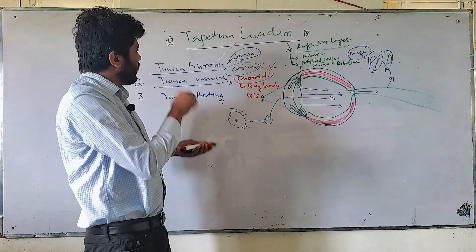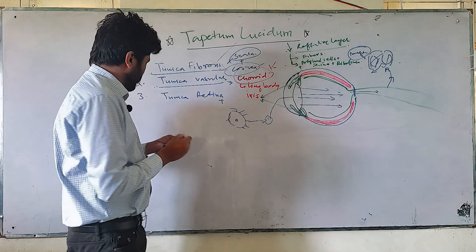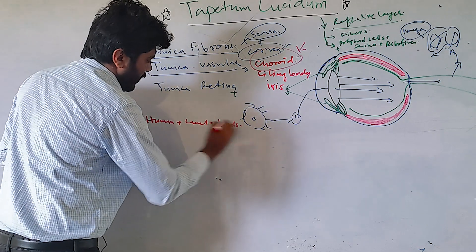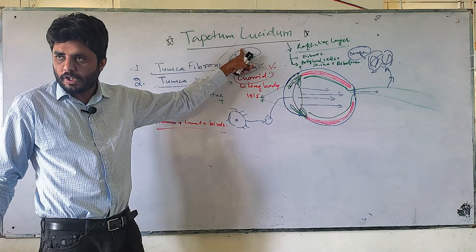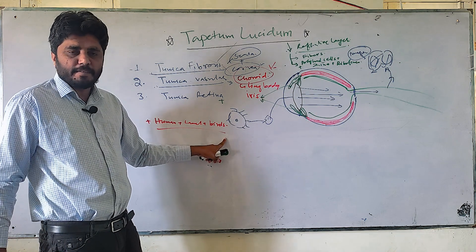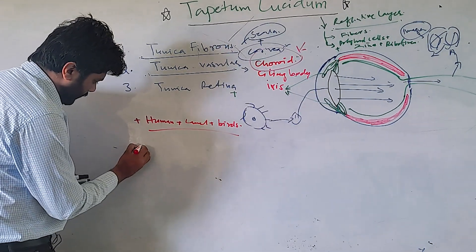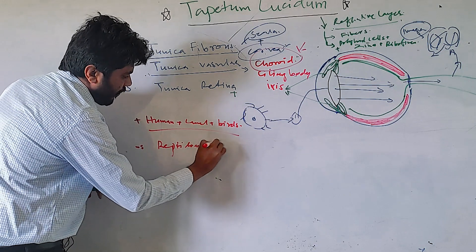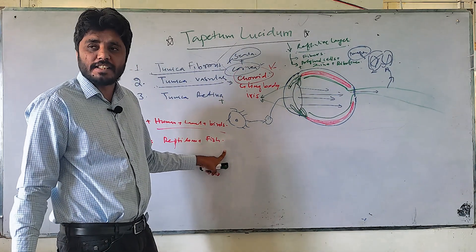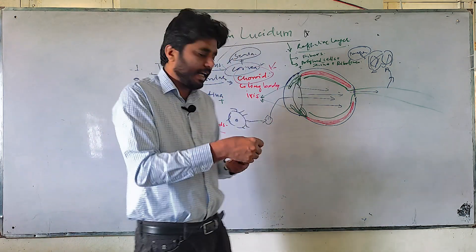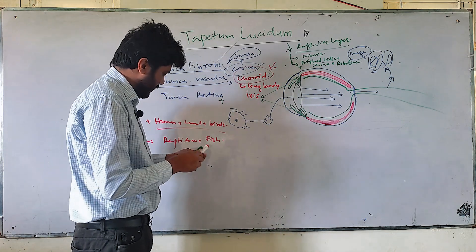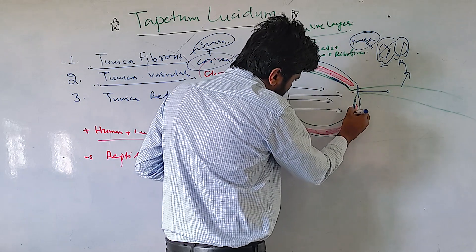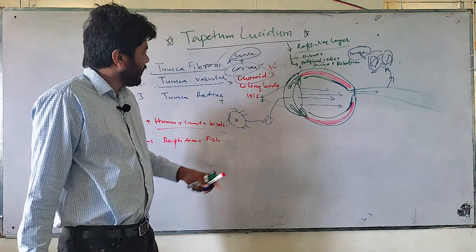There are three types of animals with regard to tapetum lucidum. First, humans, camels, and birds do not have tapetum lucidum — it is absent in them. Second, animals like reptilian species and fishes do have tapetum lucidum, but in reptiles and fish it is associated with the retina.